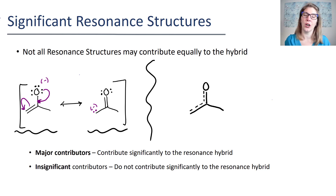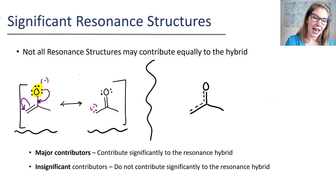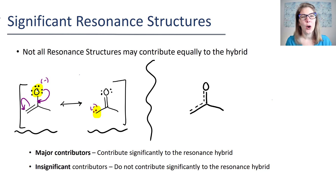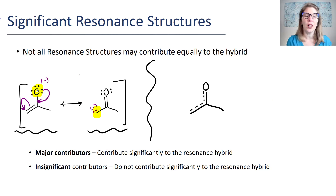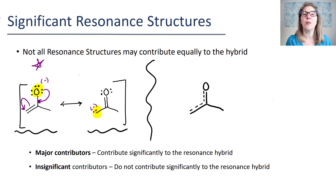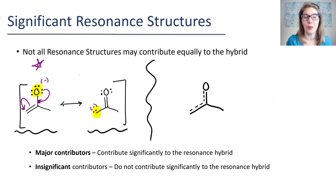Not all resonance structures are going to contribute equally. Maybe one of the structures better describes where the electron density is in the structure at any point. What I want to take notice of is how the oxygen in the first resonance structure is negative and how the extra electron density on the second structure is on a carbon. Oxygen is significantly more electronegative than carbon, so the electrons are going to hang out next to the electronegative atom more often than they're going to be hanging out on a carbon.